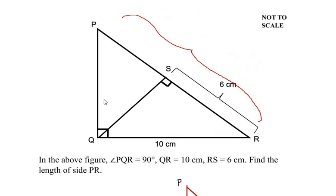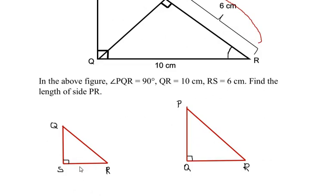The other one we can observe is from the triangle PQR, angle R is a common angle for the triangle QSR as well. So we can say that angle R is equal to angle R.